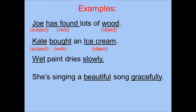Next example: Wet paint dries slowly. The word wet here is an adjective, and slowly is an adverb. Another example: She's singing a beautiful song gracefully. Beautiful is an adjective, and gracefully is an adverb.